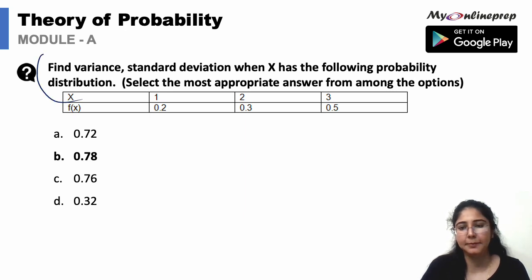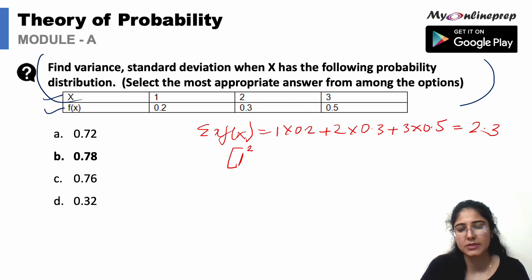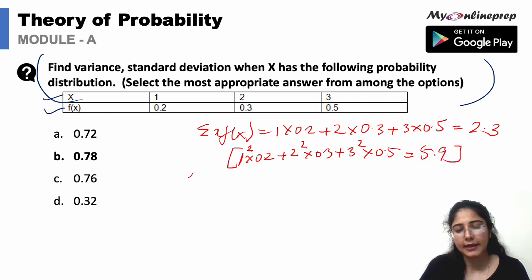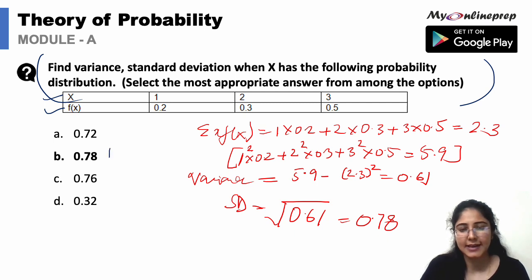Another question of the same type with different X and F series. Summation of X×F = (1×0.2) + (2×0.3) + (3×0.5) = 2.3. Summation of X²×F = (1²×0.2) + (2²×0.3) + (3²×0.5) = 5.9. Variance = 5.9 − (2.3)² = 0.61. Standard deviation = √0.61 = 0.78. The correct option is B.